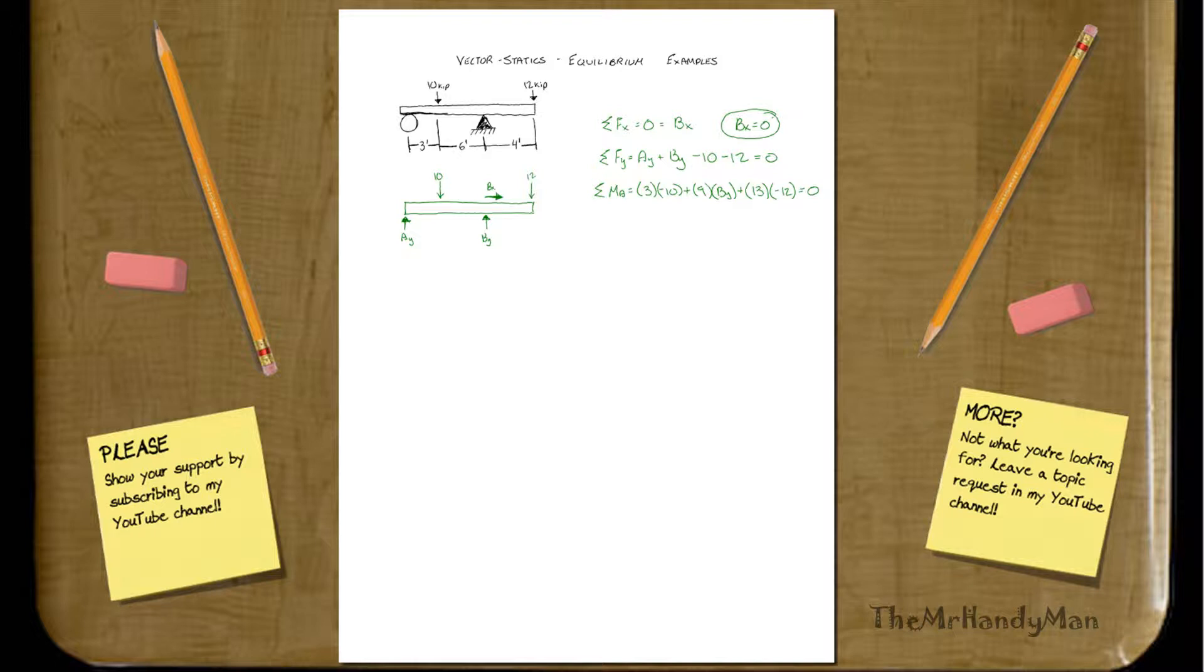So if we just work this out, what you're going to get is negative 30, right, negative 30 plus 9 BY and then minus, what is that, 144, 156, I'm thinking, 156. 156, I think that's right, having a mental breakdown here.